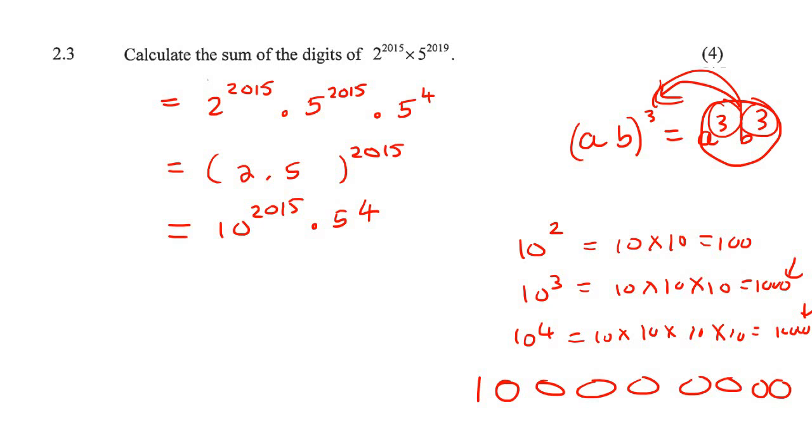So let's just say that again, if we have 10 to the power of 2015, then that's just going to be a 1, and then there's just going to be 2015 zeros.